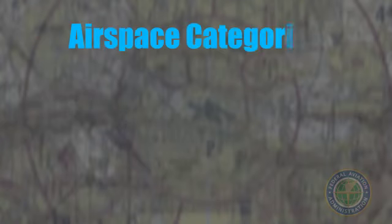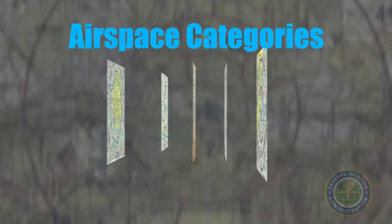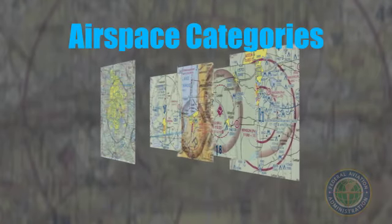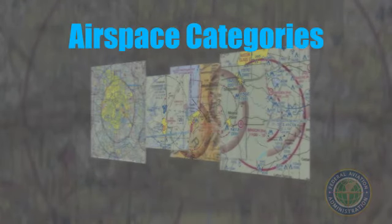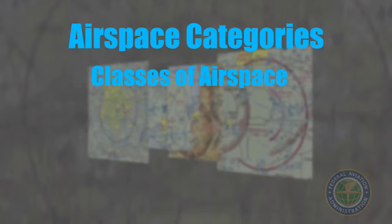One of the ways the FAA does that is by creating airspace categories and depicting them on aeronautical charts. The charts contain information including, but not limited to, classes of airspace, special use airspace, and airport locations.